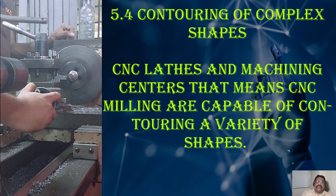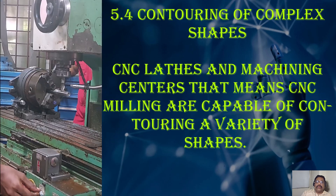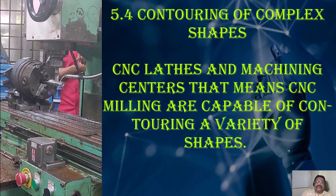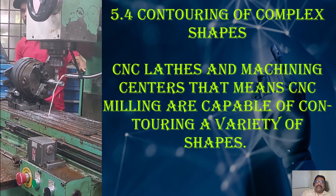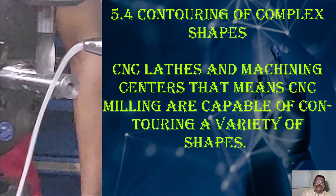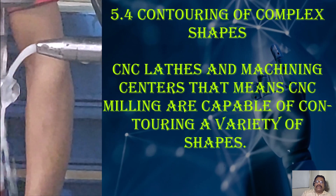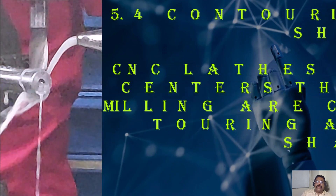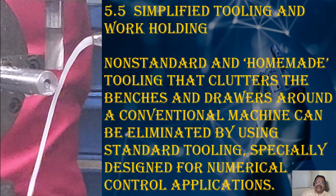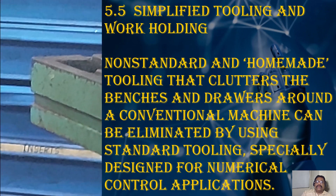Contouring and complex shaping: CNC lathes and machining centers — that is, CNC milling — are capable of contouring a variety of shapes. Good examples are CNC applications in the aircraft and automotive industries. Mirror parts can be achieved literally at the switch of a button. Storage of programs is far simpler than storage of patterns, templates, wooden models, and other pattern-making tools.